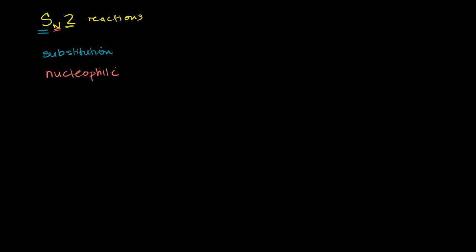Let me show you an SN2 reaction. Let's say we have bromomethane. I'll draw it in three dimensions: a hydrogen sticking out, the bromine right over there, another hydrogen in the back, and a hydrogen that comes up. The three dimensions won't matter that much here — this is not a chiral carbon, there's no handedness here. But in the future, we'll think about chiral carbons and what might happen to them as they undergo SN2 reactions.